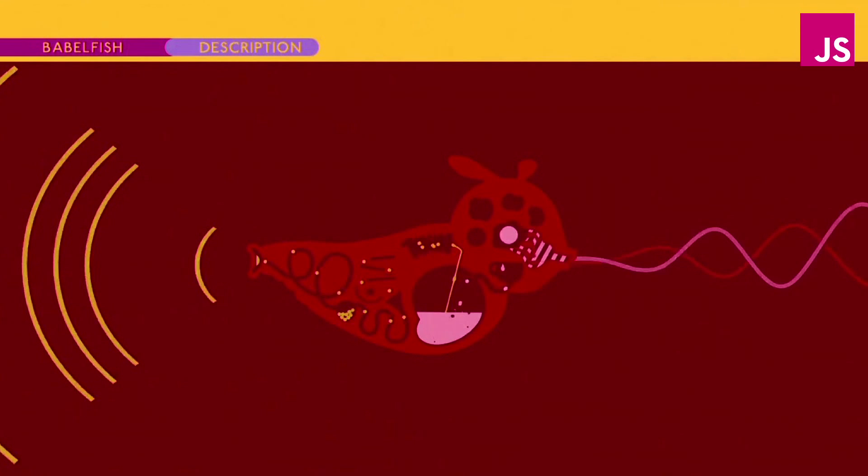According to the author, it's a small, yellow, leech-like, and probably the oddest thing in the universe. It feeds on brainwave energy and — long story short — it's a universal translator. The main problem is that you have to actually stick one into your ear to make it work, but once you do, you'll understand anything said to you in any language. If you haven't read the book, I really recommend you to.